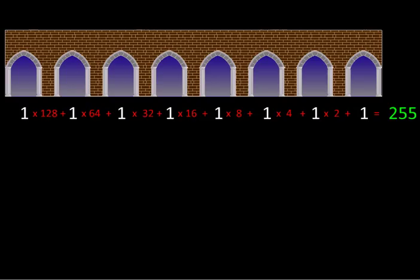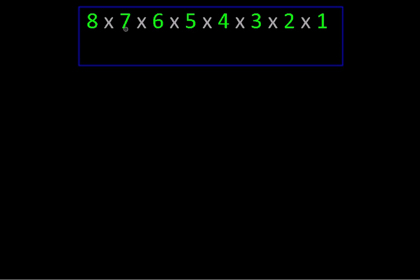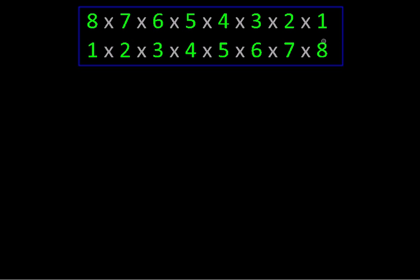So how does Bhaskaracharya solve it in Lilavati? The trick says: first write the numbers 1 to 8 in reverse — so 8, 7, 6, 5, 4, 3, 2, 1 — and then just below them write them in ascending order 1 to 8 again. Then, depending upon how many doors we are keeping open, we take ratios. For example, if you want to keep just 1 door open, take 1 number from the top and 1 from the bottom sequence: 8 upon 1 gives 8 ways of keeping a single door open out of 8.